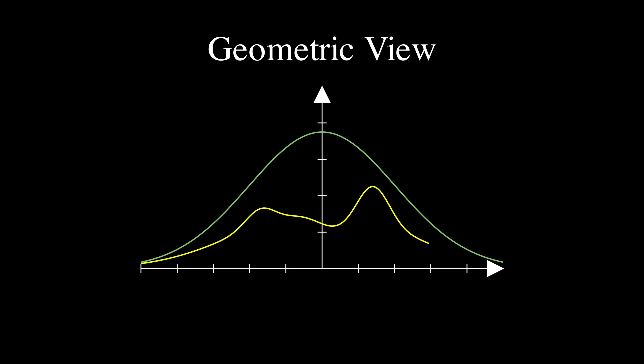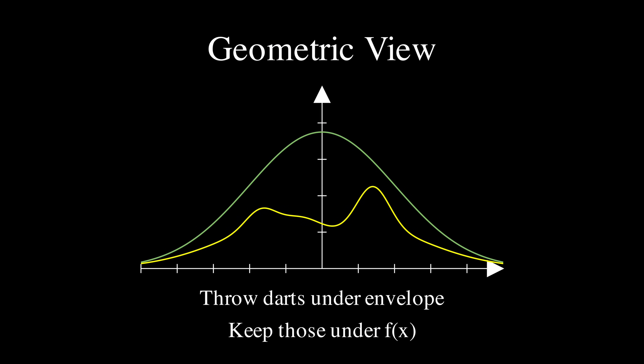This method has a beautiful geometric interpretation: you can think of it as throwing darts uniformly under the envelope m times g, and keeping only those darts that land below the curve f. Remarkably, the kept darts follow the distribution of f exactly — not approximately, but exactly — which is why this method is so powerful.